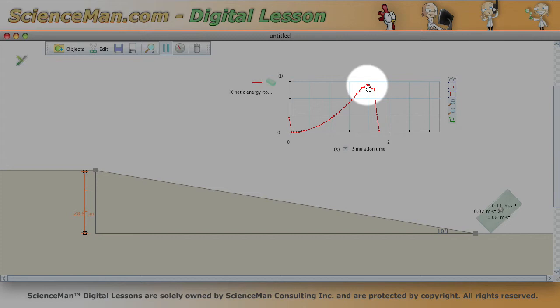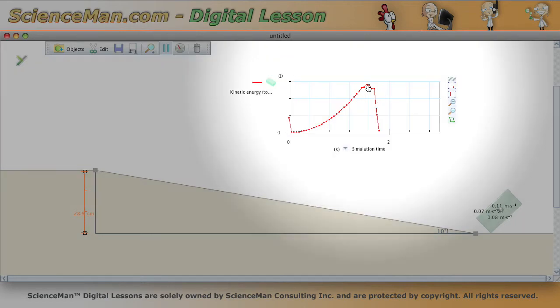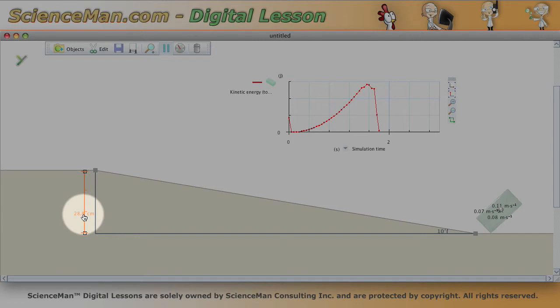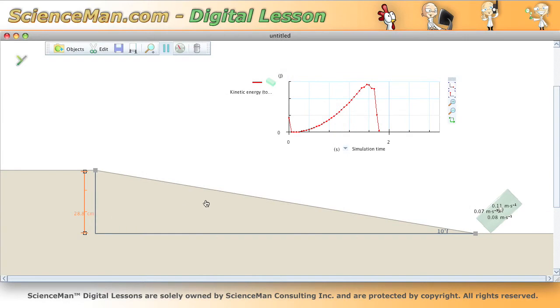So what does that mean in terms of how much potential energy we started with, what happened with the conversion? Well if we look very close we see the height of our ramp is 28.8 centimeters.